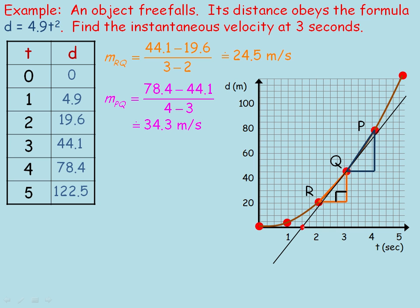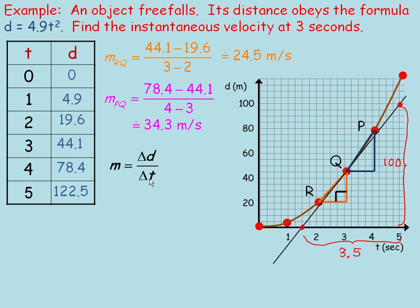One thing we could do is read the tangent line slope from the graph. Taking a couple of points — there's a point, and another point up here — we can read from the graph a change in time of 3.5 seconds and a change in displacement of 100 meters. The slope, or rate, is change in displacement over change in time: 100 divided by 3.5 gives a slope of about 28.6 meters per second. That's a pretty good approximation for the instantaneous velocity at 3 seconds.